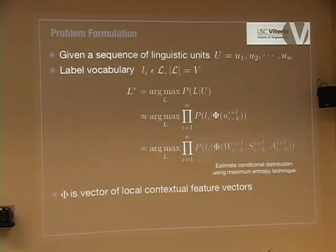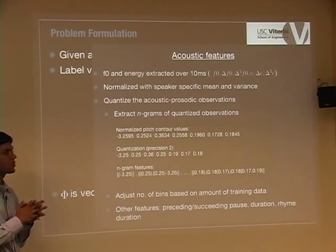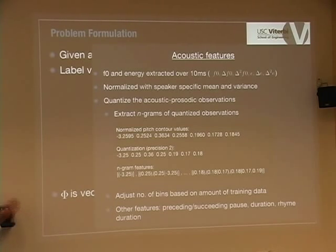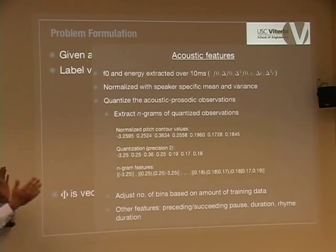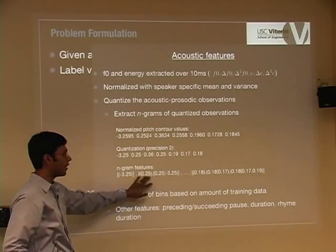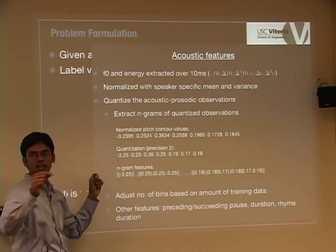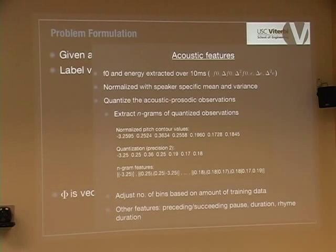We also use acoustic features. The conventional approach extracts summative statistics from pitch contours — slope, range, mean, minimum — and throws everything into a classifier. In contrast, we normalize the sequence of pitch values with speaker-specific means and variances (Z-norm), quantize these acoustic prosodic observations to some quantization precision, and then extract n-gram features out of this acoustic prosodic contour. So instead of summative statistics, we use a fine-grained approach extracting n-grams of acoustic prosodic values — analogous to how MaxEnt uses lexical features, but for acoustic features.